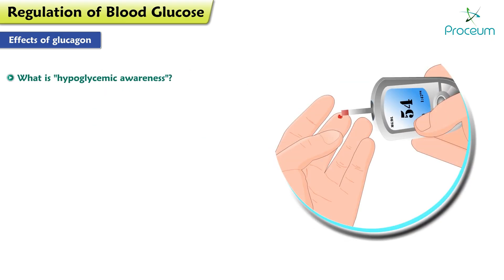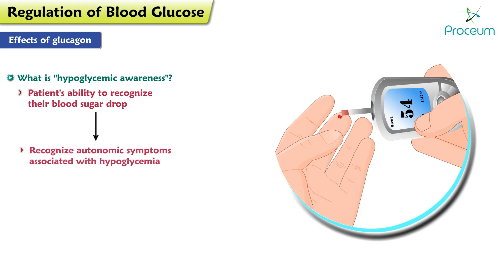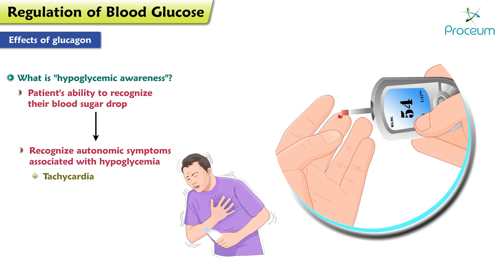What is hypoglycemic awareness? It's a patient's ability to recognize their blood sugar drop as they recognize the autonomic symptoms associated with hypoglycemia, like tachycardia, diaphoresis, tremors, hunger, etc. Thank you for listening to this module about the regulation of blood glucose.